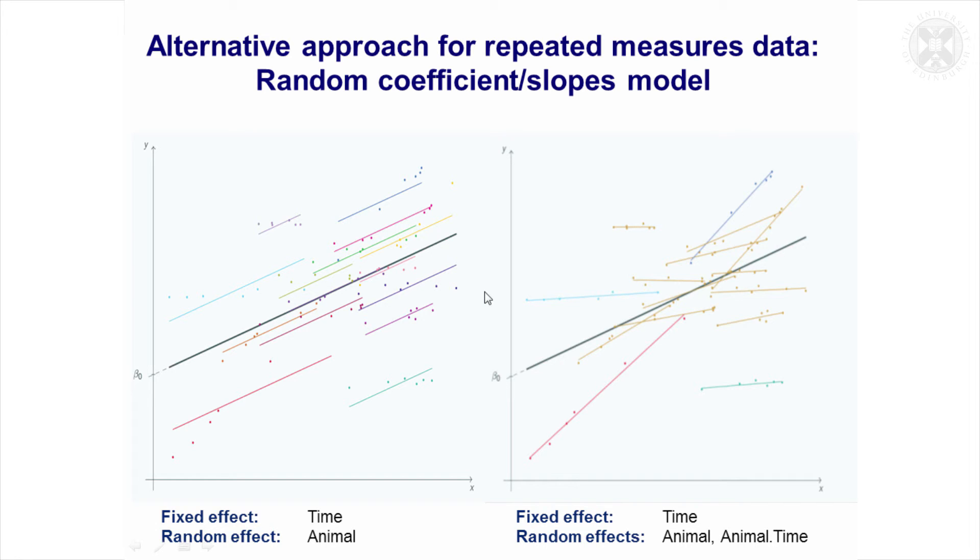Of course you could fit that slope, which would be the animal by time effect, as fixed, but then that's treating all the animals as independent. You really want to treat that as a source of variation—that the slope varies randomly between the animals. That allows you to assess the overall slope and the time effect against the background of random variation of the slopes between the animals. This solid line is the overall slope effect. Rather than assuming that all these observations are independent around it, it takes into account they've come from different animals and each animal has its own slope which is going to vary randomly around the overall average slope. So that's another way mixed models can be used.